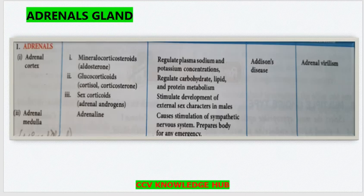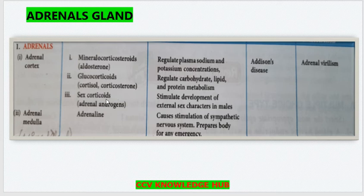The first endocrine gland is the adrenals. There are two parts: adrenal cortex and adrenal medulla. From the adrenal cortex, three types of hormones are secreted: mineralocorticoids, glucocorticoids, and sexcorticoids. Under mineralocorticoids, aldosterone is the main hormone secreted. It regulates plasma sodium and potassium concentrations.